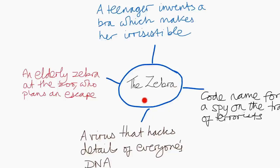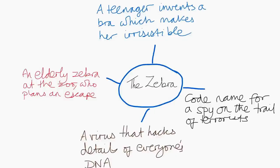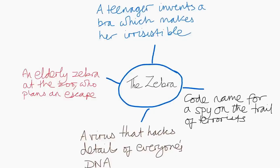There's my title in the middle, and I literally put down anything. There is no editor in my mind at this stage. Many students sit there thinking, not putting ideas down. I'm going to be crossing ideas out in this planning stage, and therefore everything I think of goes down. So a teenager invents a bra which makes her irresistible — I've got all sorts of things in mind there. Or a code name for a spy on the trail of terrorists.